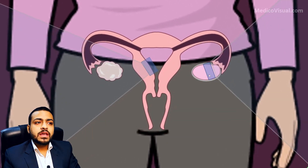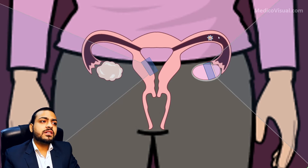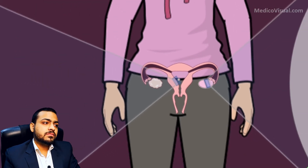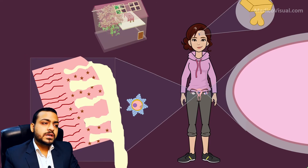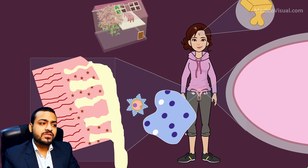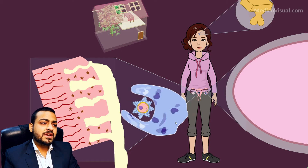Now let's see what happens if fertilization does not occur. The secondary oocyte is released and this time it does not get fertilized. It will ultimately come into the uterine cavity, but because it is not fertilized it is not an embryo and cannot implant or burrow inside the endometrium. It will remain there and within a day or two it will be destroyed by macrophages.